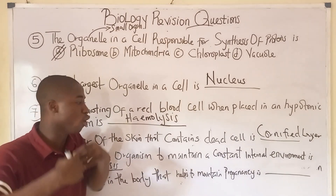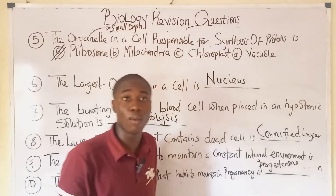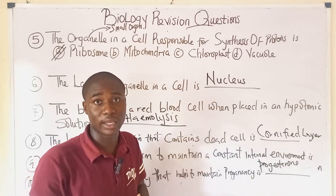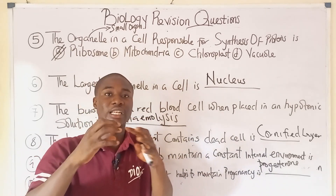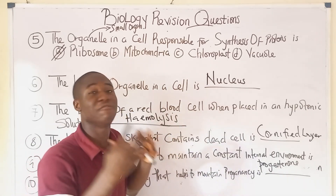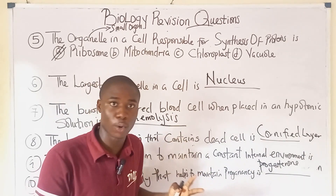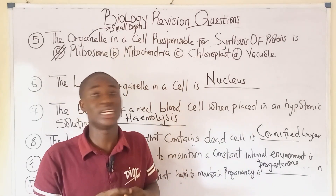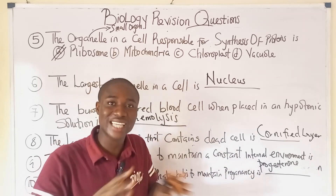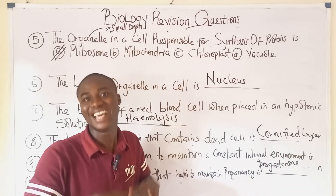Question ten: the hormone in the body that helps to maintain pregnancy is called progesterone, also known as the pregnancy hormone. It helps to prevent ovulation. The estrogen or oestrogen hormone helps regulate the female reproductive cycle. Other hormones include oxytocin, which helps to induce birth, and prolactin, which helps in the production of milk. If you haven't subscribed yet, click the subscribe button and share these lessons with your friends.